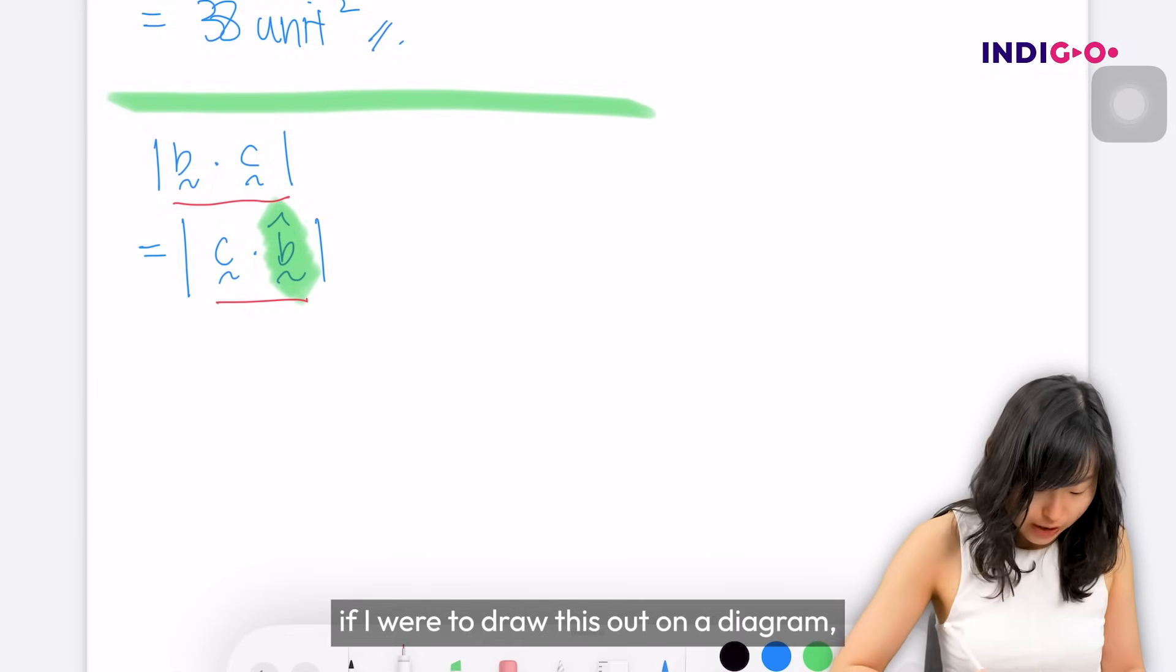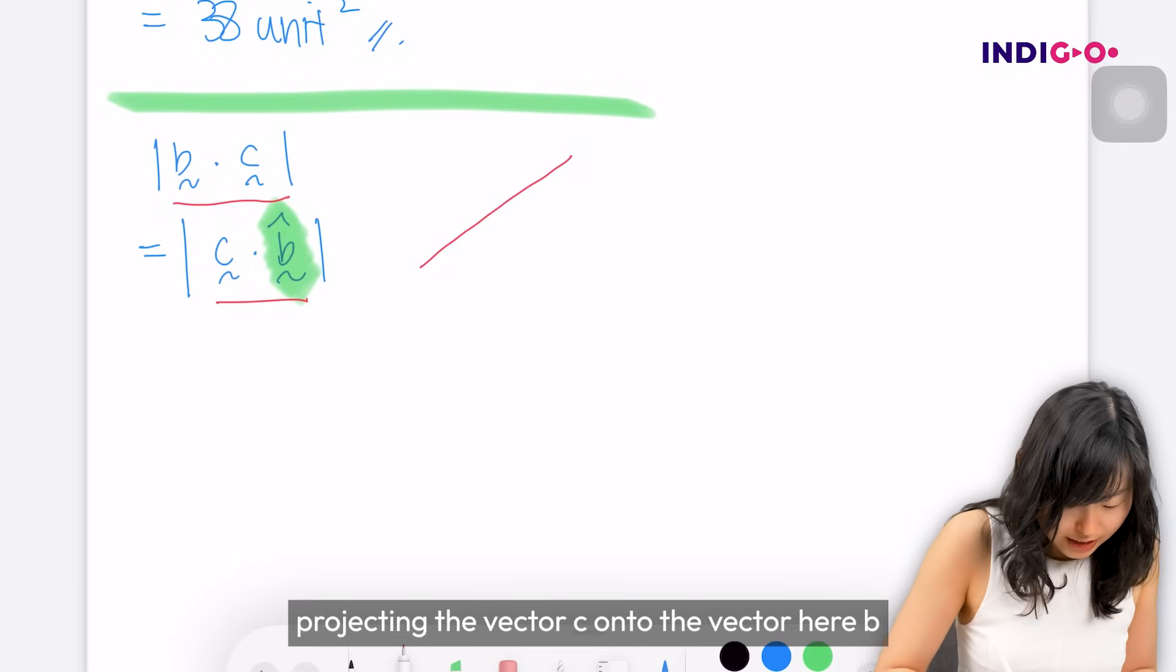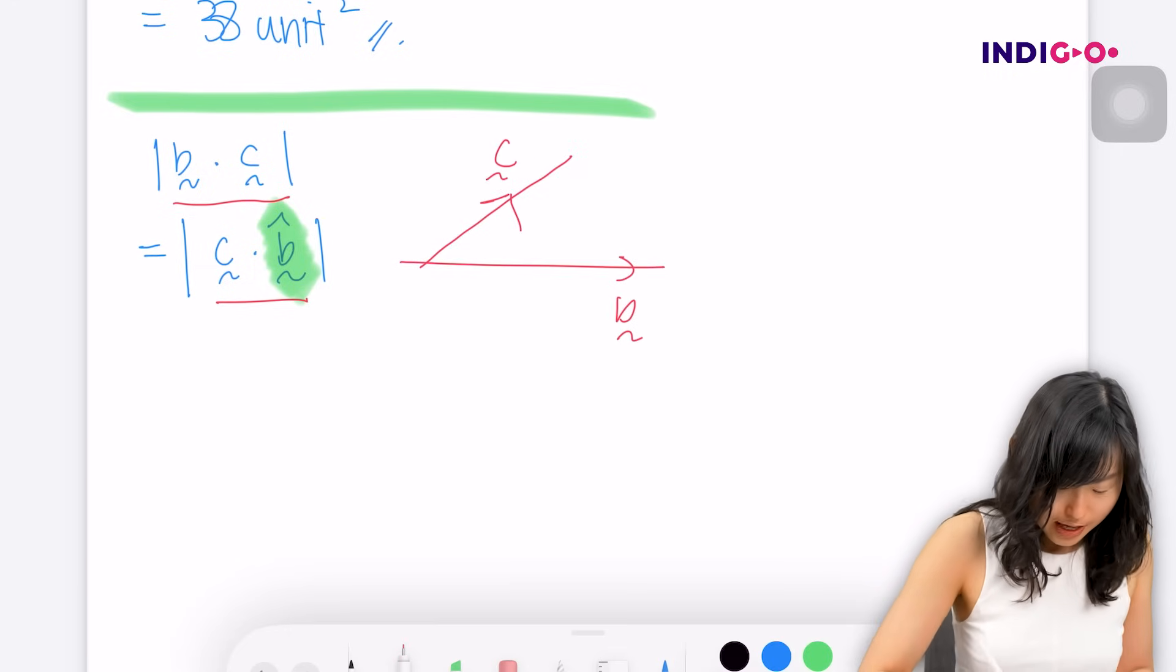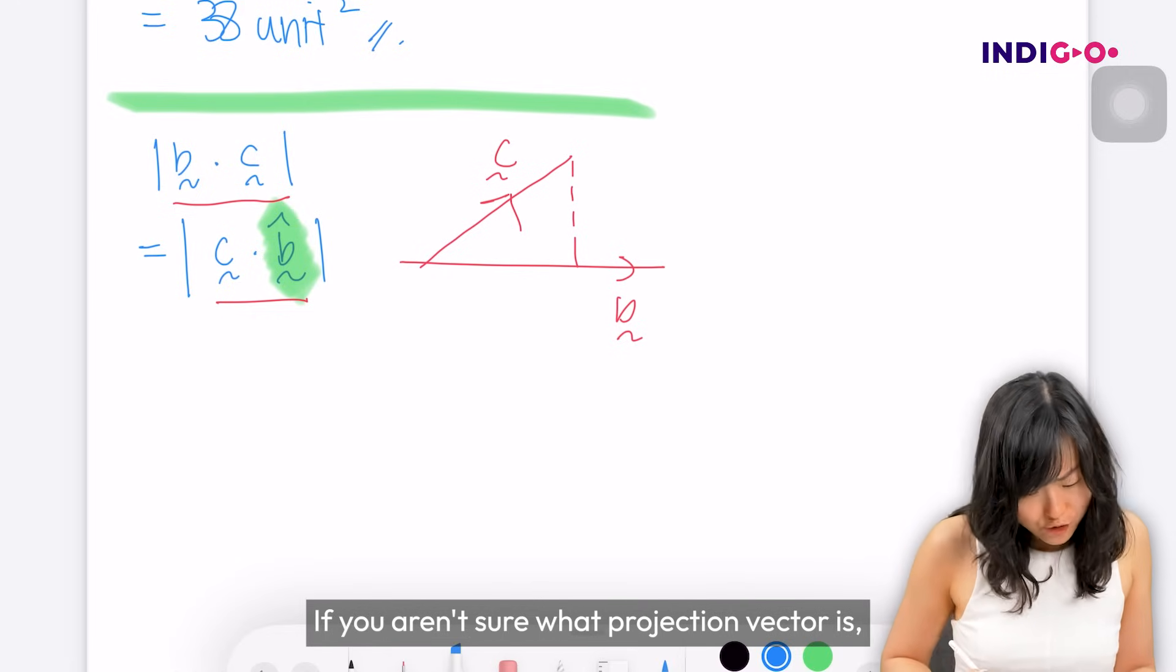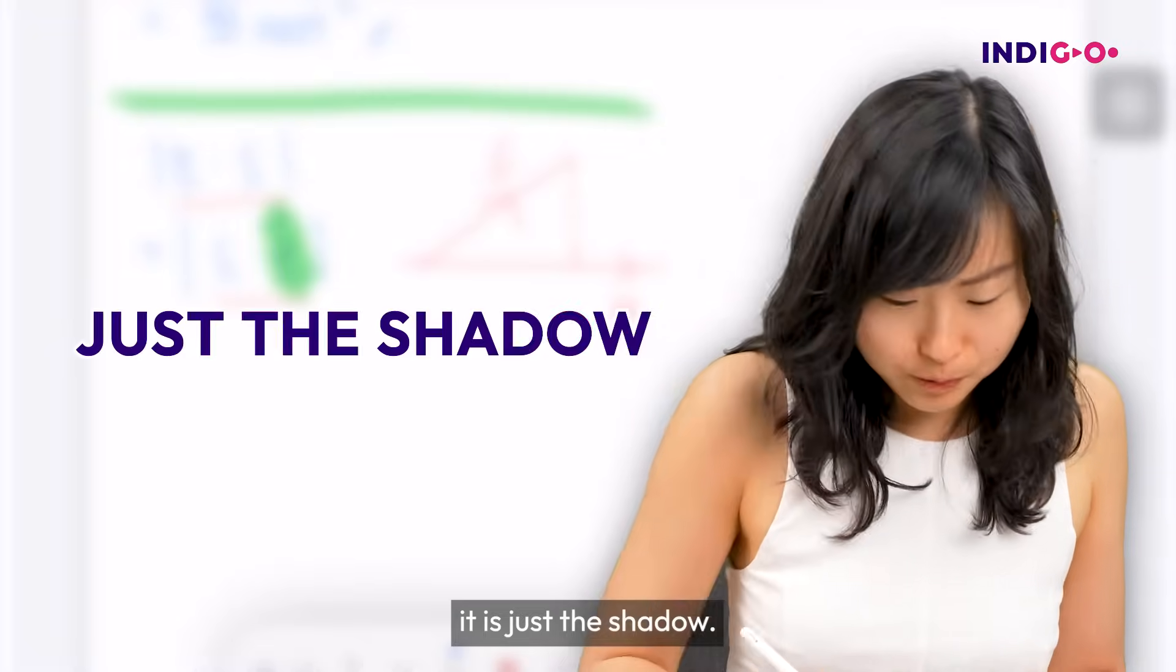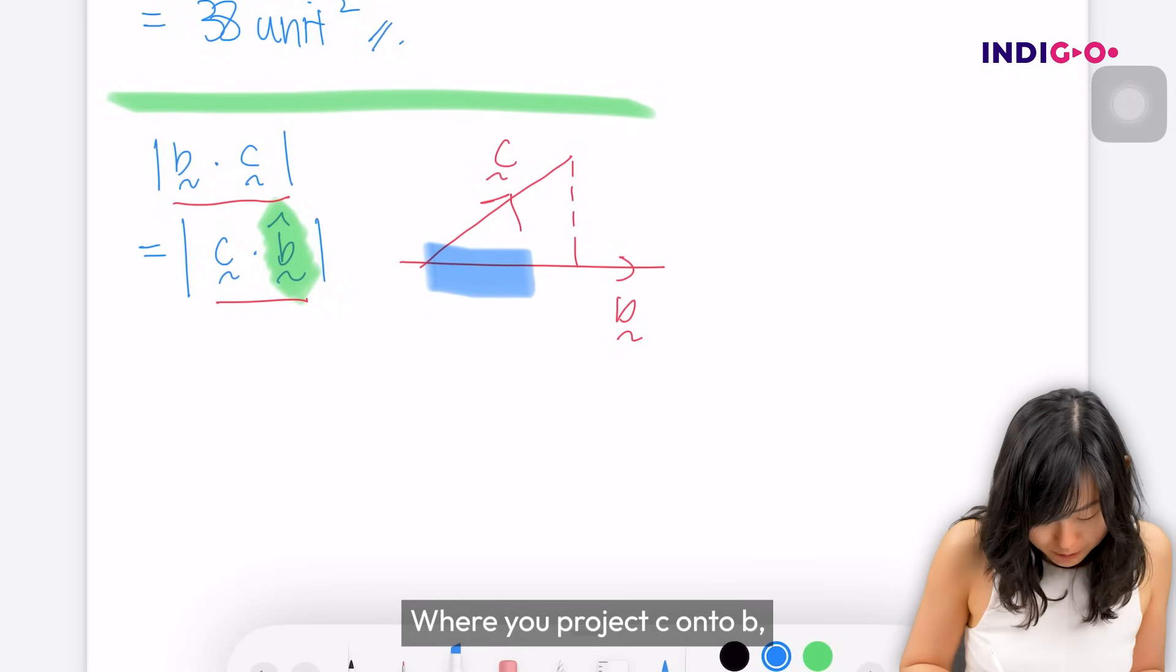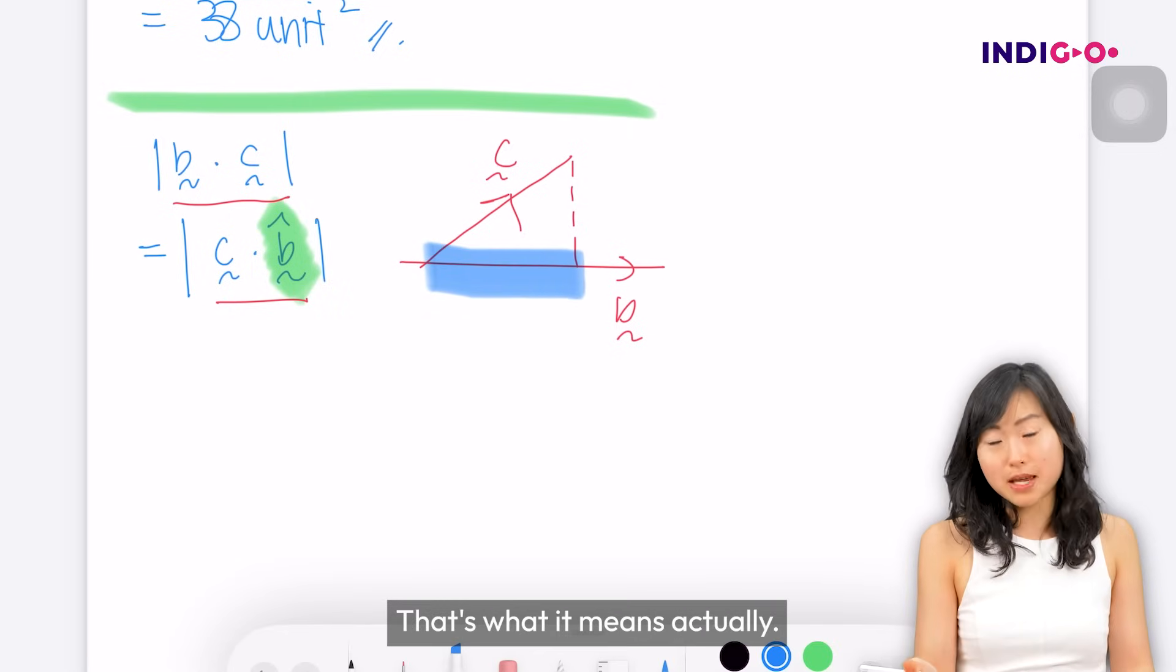In other words, if I were to draw this out on a diagram, it means I'm projecting the vector c onto the vector b and what I'm getting is the length of the projection vector. If you're unsure what projection vector is, it is just the shadow. Where you project c onto b, you're going to get the length of this, that's what it means.